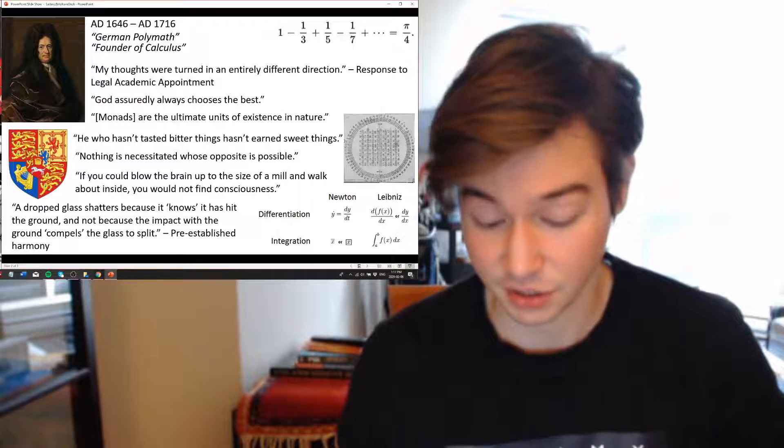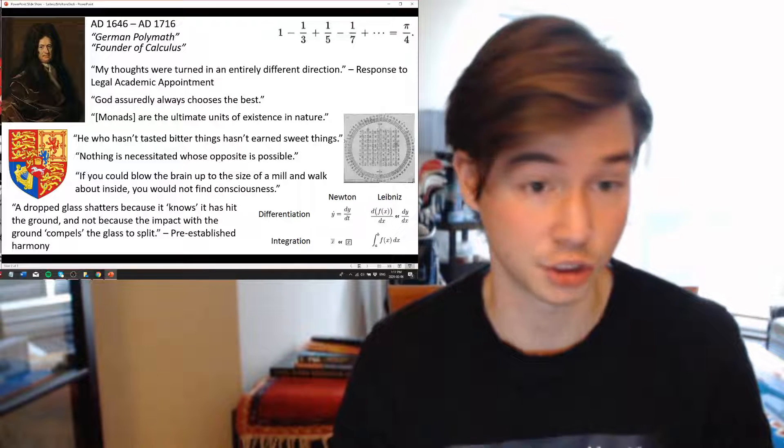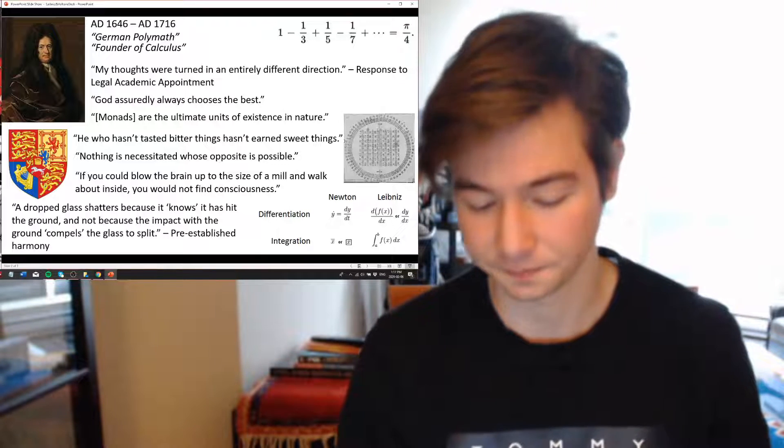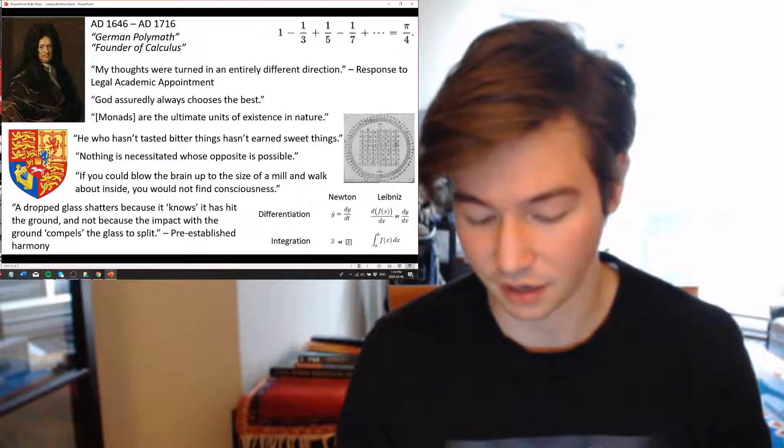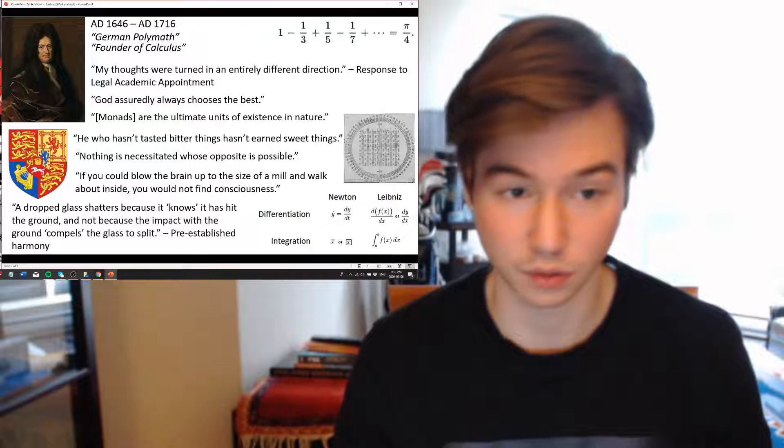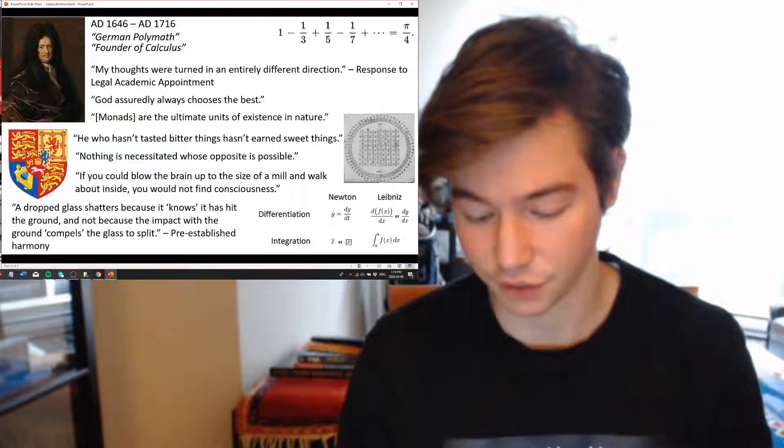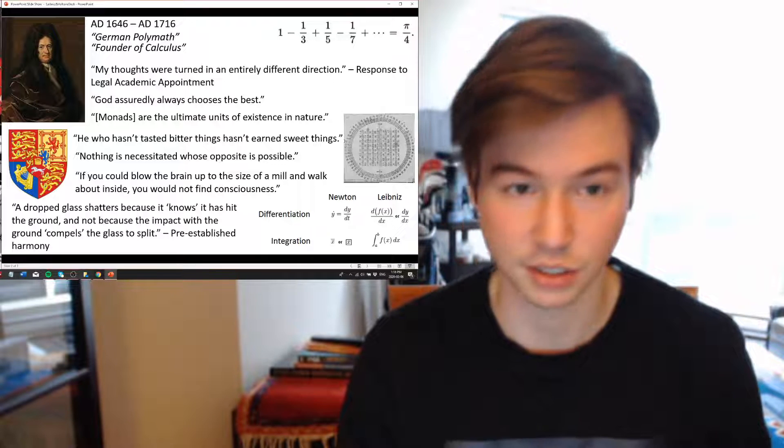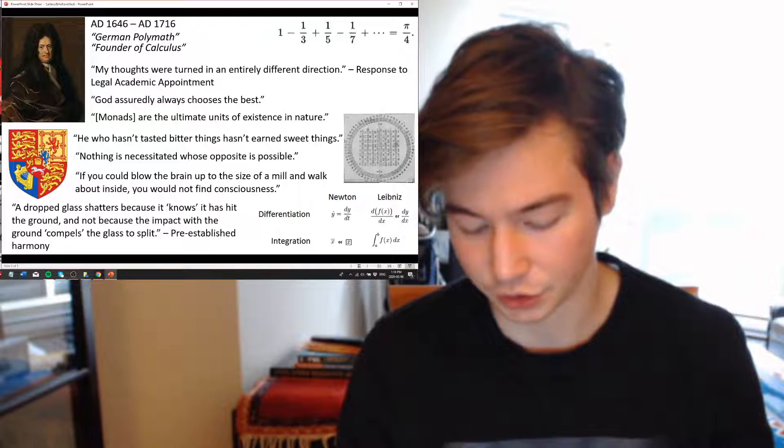In 1708, John Keill, with Newton's blessing, accused Leibniz formally of plagiarism, and what was known as the calculus priority dispute began. The Journal of the Royal Society upheld the charge that Leibniz did copy it. So the British sort of abandoned Leibniz at this time. Perhaps because Newton was British, and perhaps they just wanted to promote a local individual. Once again, I'd like to assume they were both the victors.